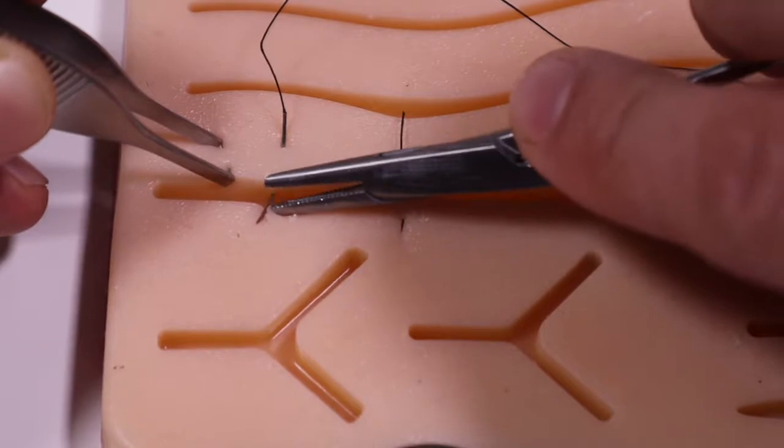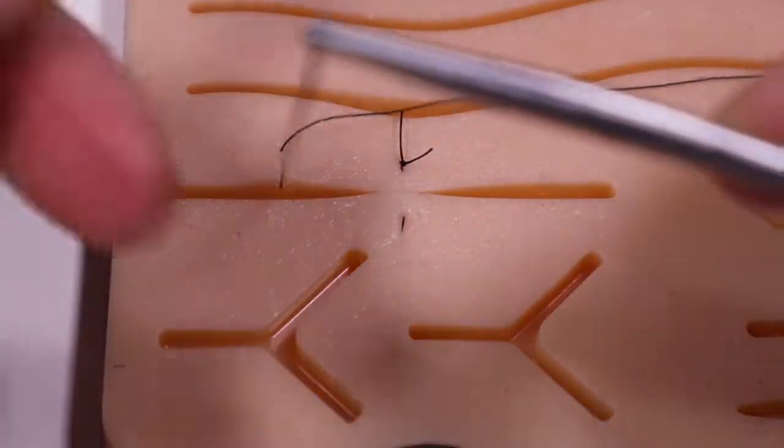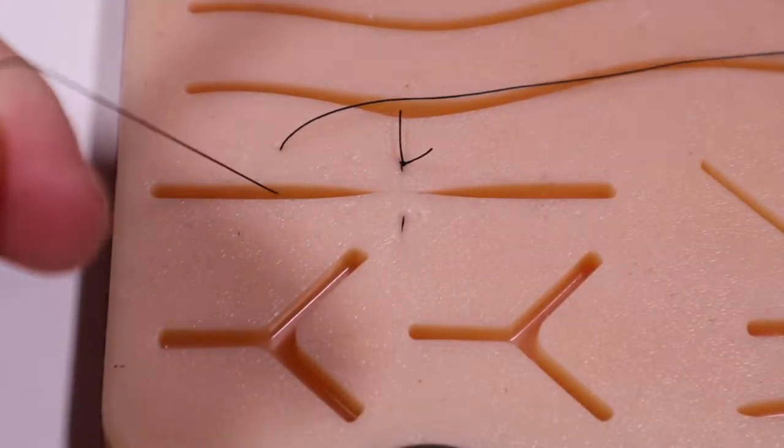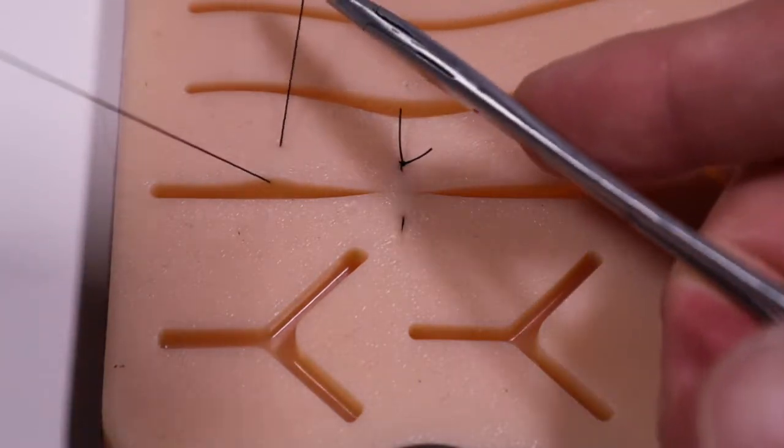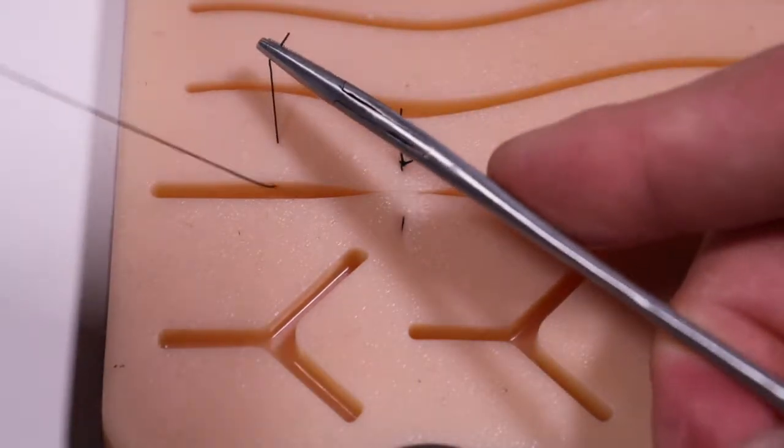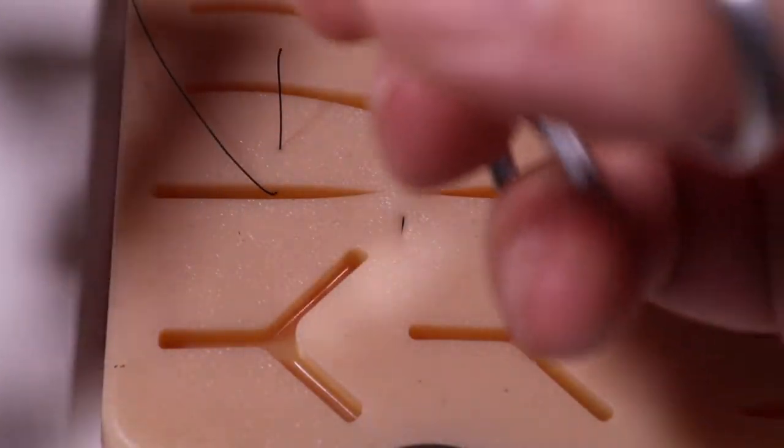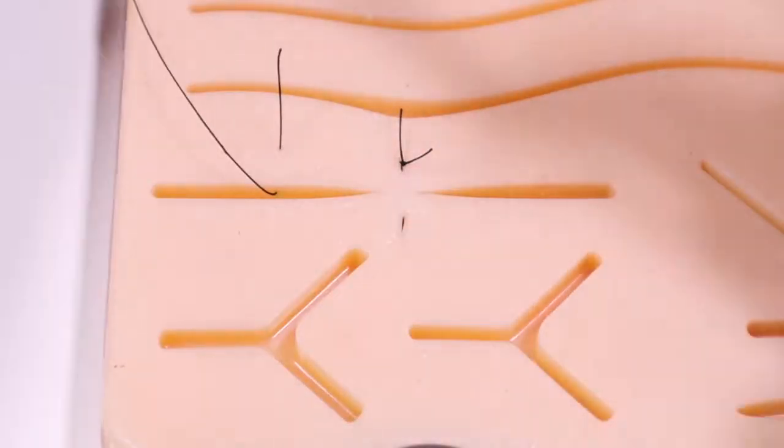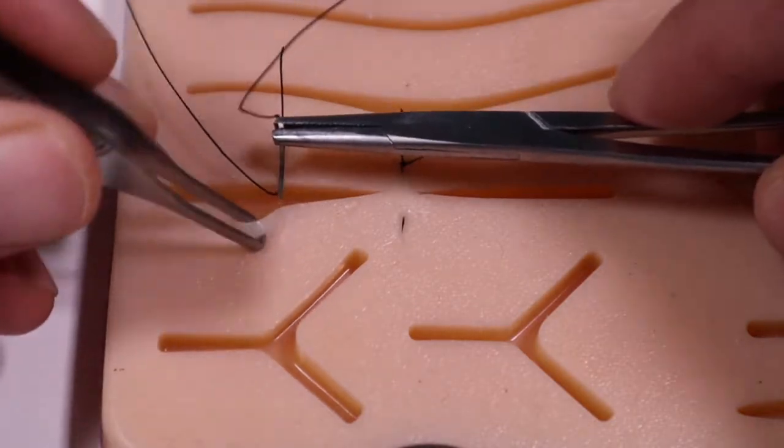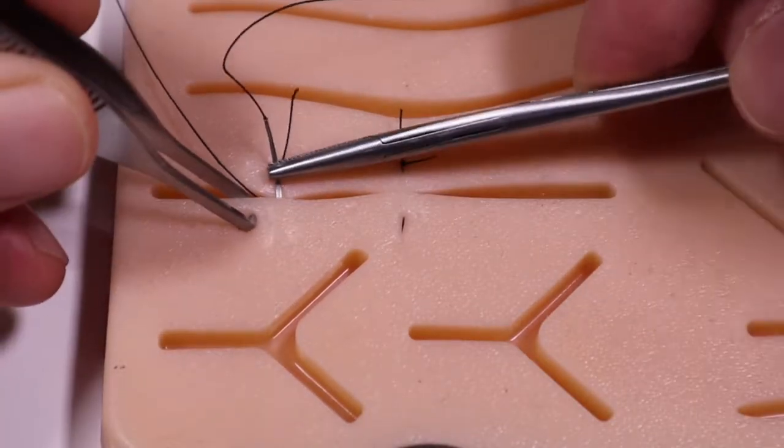Just a reminder of general suturing technique: the needle enters the skin at a 90-degree angle, and then you rotate your wrist through. Enter at the same depth that we exited.